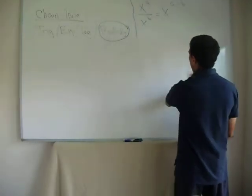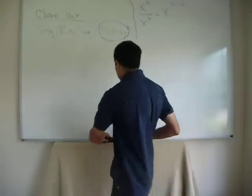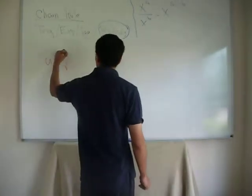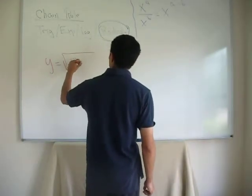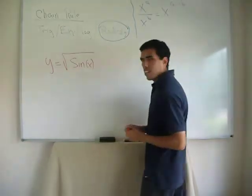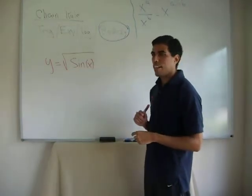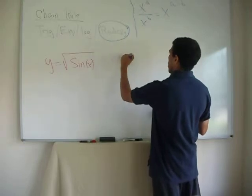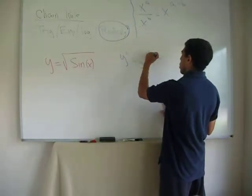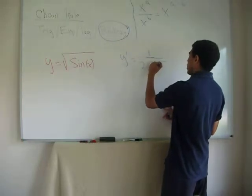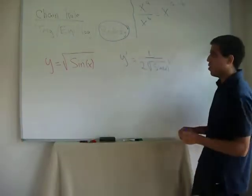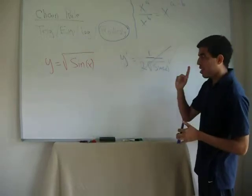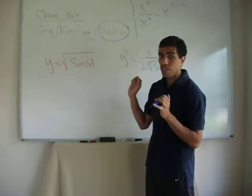What happens if we have something like y equals the square root of sin(x)? Aha! Now things get interesting, right? You cannot do, and you cannot do something, this is a mistake, something like y prime, one half, square root of sin x? Ta-da! No, no, no, no. Oh, but that's the square root rule! No!